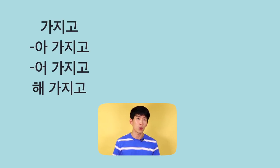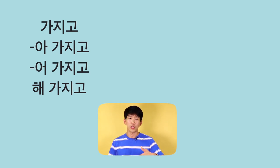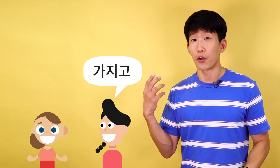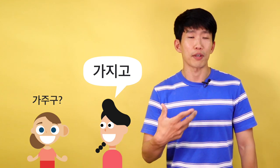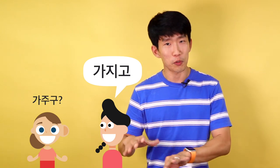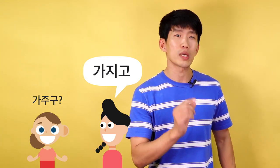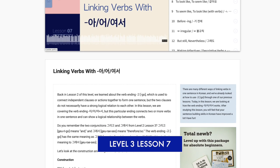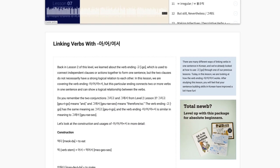We're talking about 가지고, or 어 가지고, or 해 가지고, which can replace 아서, 어서, 여서, or 해서. And apparently to many Korean learners who are just starting out, it can sound like 가, 지, 고. We've actually gotten the same kind of question or misunderstanding from many different people. We have a lesson on 아서, 어서, or 이어서 at level 3, lesson 7 — I'll link it down below.